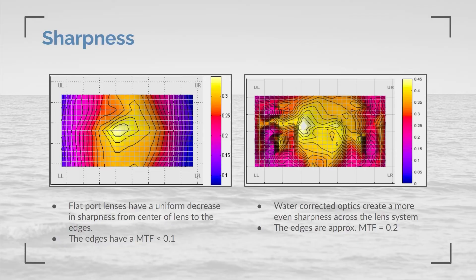These graphs are created by image analysis software used here at Sub-C. The image on the left is of a flat port, and the image on the right is of a corrected optic. The higher the value of sharpness, the more detail in the image. With a flat port, image sharpness is lower as you go from the center of the lens to the edge. The effect is still present with a corrected optic due to an inherent effect of all lenses, but the overall sharpness is evened out across the whole image — the color coding shows blue on the edges with a flat port, indicating very low sharpness, which is not seen with the water-corrected optic.